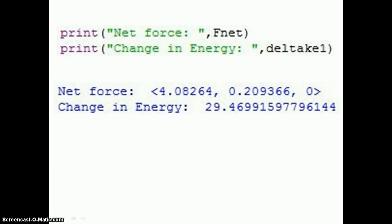Python printed the net force and change in energy, because according to the energy principle, change in energy of a system is equal to the work done by the surroundings, which is in this case the tennis server and her racket. So the work done by the tennis player through her racket during the serve was about 29.47 joules.